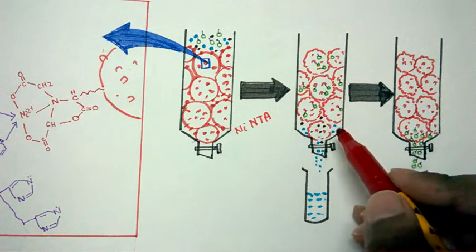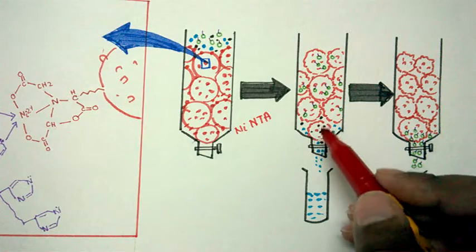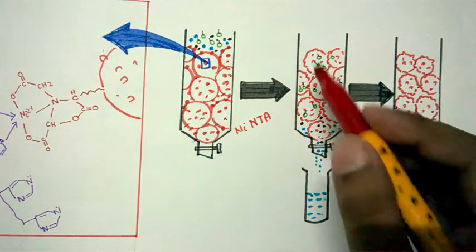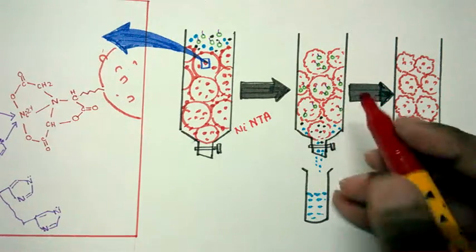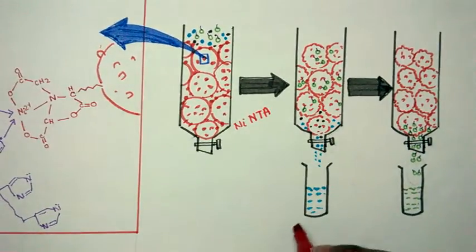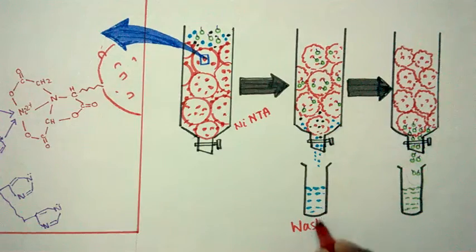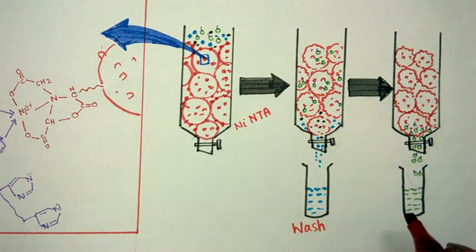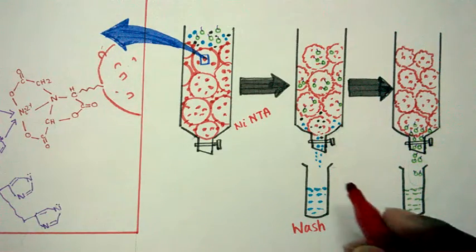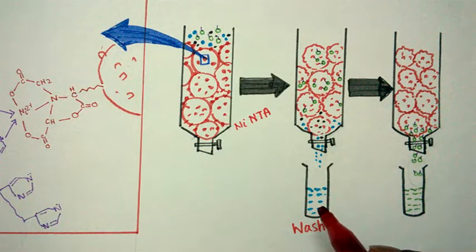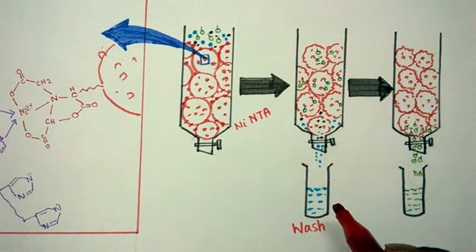Other proteins such as these blue proteins or these black ones, they are washed out when we are using a washing buffer. So this step is wash step. This is a wash step, we are using a washing buffer to wash out all the non-specific bindings and all the unnecessary proteins that we don't need.